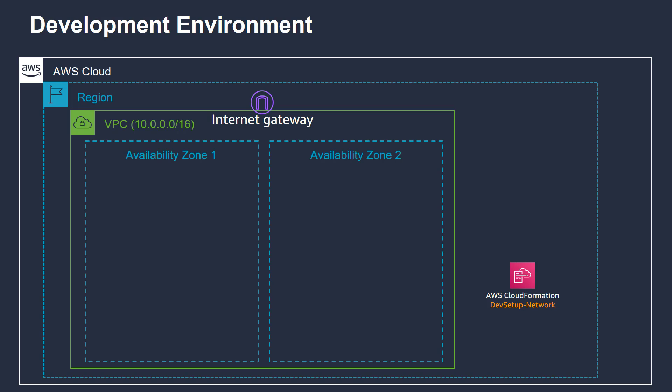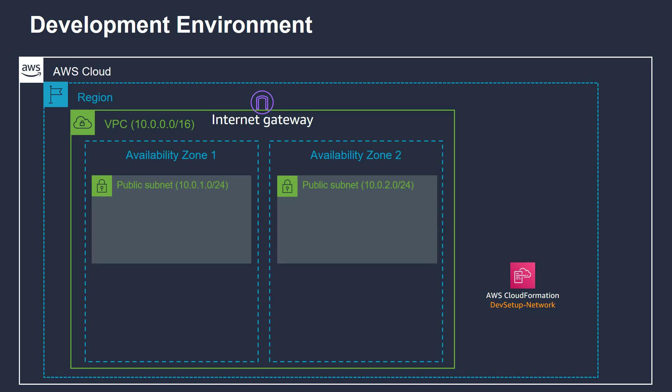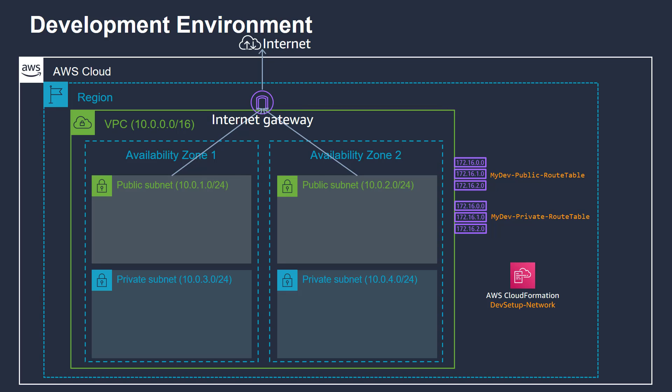In two availability zones, it will create two public subnets. It will also create an internet gateway and a public route table that routes traffic to the internet. The CloudFormation will also create two private subnets along with two private route tables that will route traffic internally within this VPC.